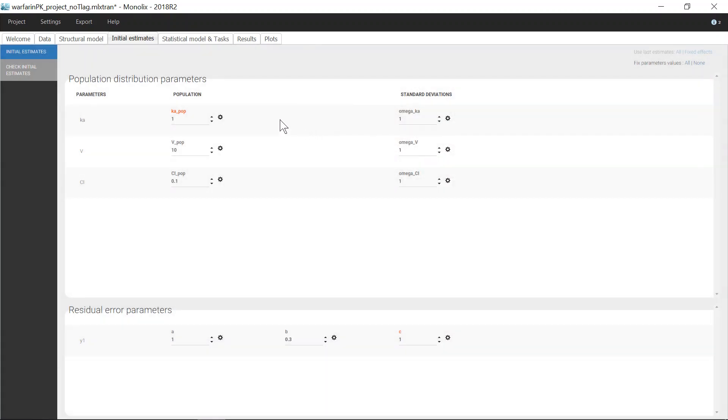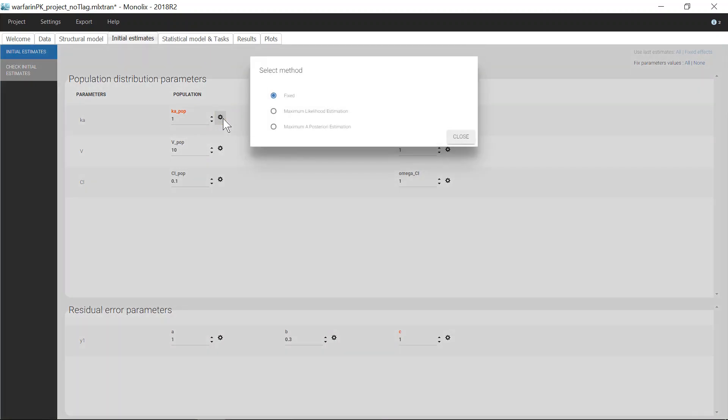Fixed parameters appear in orange in the tab Initial Estimate. If I still want to estimate Ka-pop based on the data, but taking also into account the prior value, I can choose a Bayesian estimation method called Maximum Aposteriori Estimation.